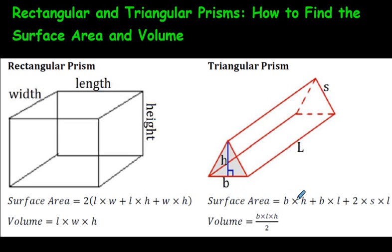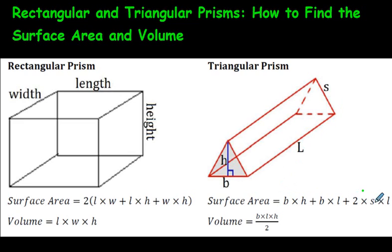For surface area of the triangular prism, I tell students: don't worry about the long formula. Just find the area of each rectangle — the two side rectangles and the one on the bottom — plus the area of the two triangles. Add up all your answers and you will know the surface area. But it's good to know that formulas do exist for this as well.